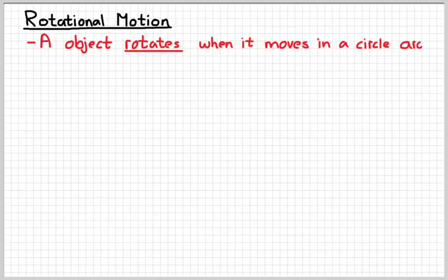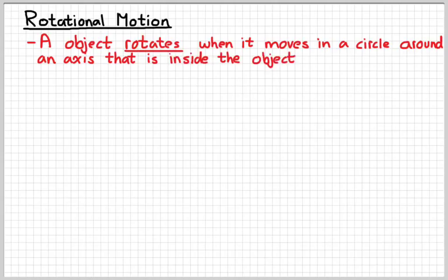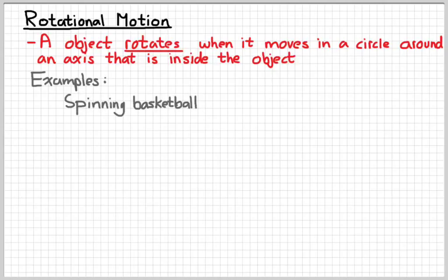So the first question you might ask is, what is a rotation? An object is rotating when it moves in a circle around an axis that is inside or internal to the object. Some examples include spinning a basketball, spinning a basketball on your fingers, and a wheel rotating on a moving car. Those are examples of a rotation because the point that it rotates about is inside the object.